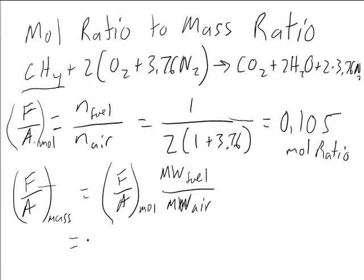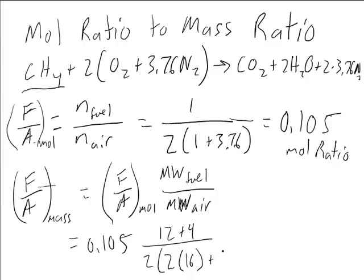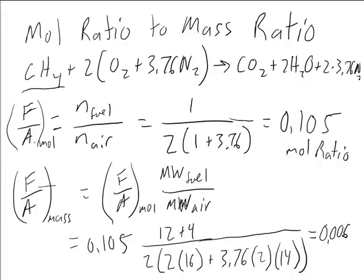So in our case, we know this is 0.105, our mole ratio. And we can look at our molecular weight of methane, which is CH4. So that's 12 plus 4. Molecular weight of carbon is 12 grams per mole, and the molecular weight of hydrogen is 1 gram per mole. And then for the air, we're going to go 2 times 2 atoms of oxygen times 16 plus 3.76 times 2 times 14. And if we work that out, then we get 0.00612.